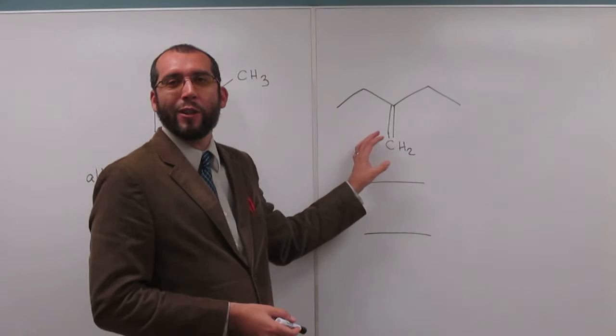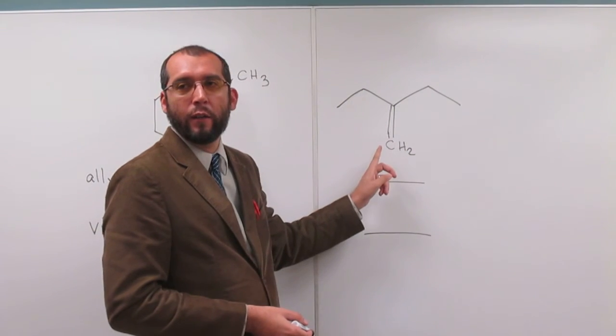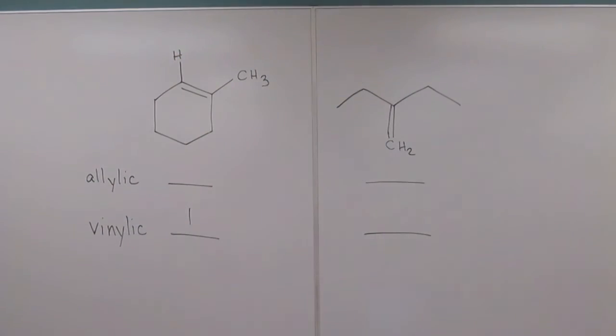So can we try this one together? When we look at the double bond here, how many carbons do we have attached directly to that double bond? Two, right? So the other two substituents must be what? Hydrogen atoms. So those two hydrogen atoms we would call vinylic.